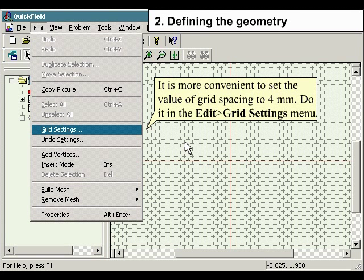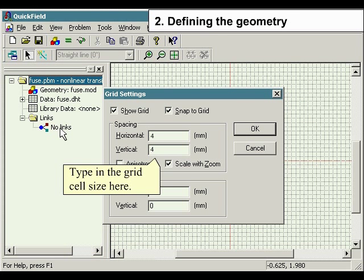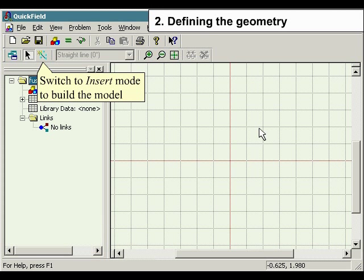It is more convenient to set the value of grid spacing to 4mm. Do it under the Edit menu and select Grid Settings. Type in the grid cell size here. Switch to insert mode to build the model.